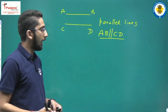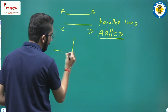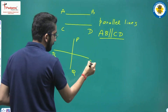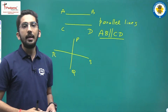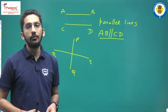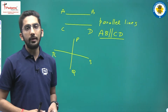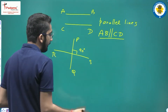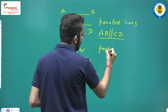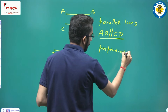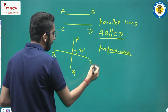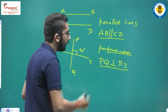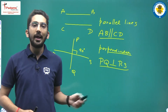Next, we have perpendicular lines. If two lines intersect such that the angle between them is 90 degrees, then we say these two lines are perpendicular to each other. For example, if line PQ and line RS intersect at 90 degrees, then PQ is perpendicular to RS, meaning the angle between them is 90 degrees.